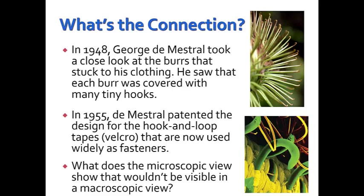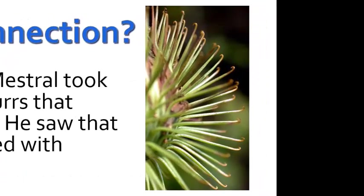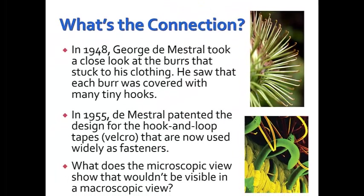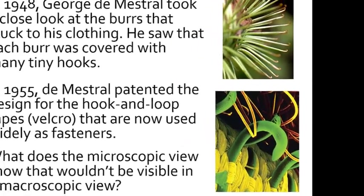In 1948, George de Mestrel took a close look at the cockle burrs that stuck to his clothing. Each burr was covered with many tiny hooks. In 1955, de Mestrel patented the design for the hook and loop tapes, which we now call Velcro, that are now used widely as fasteners. The microscopic view shows the hook actually hooking through the loops from the other type of fabric — something that wouldn't be visible in a macroscopic view.